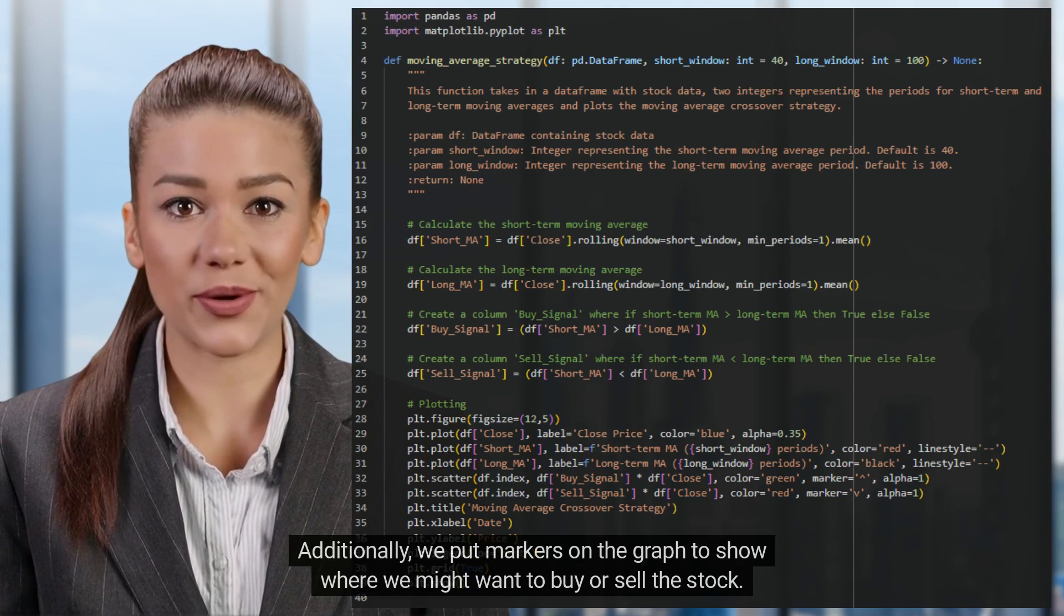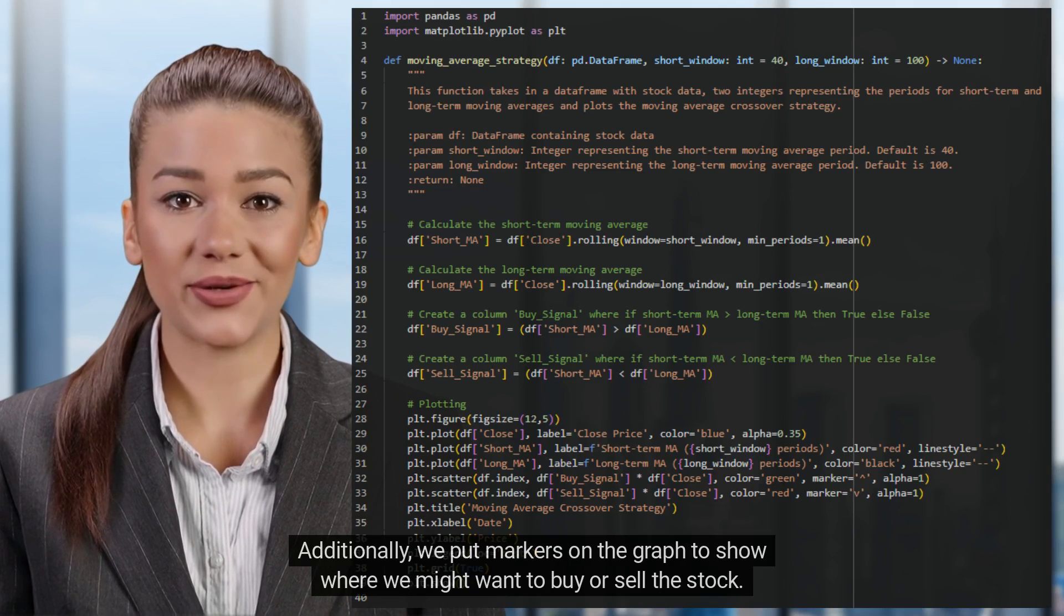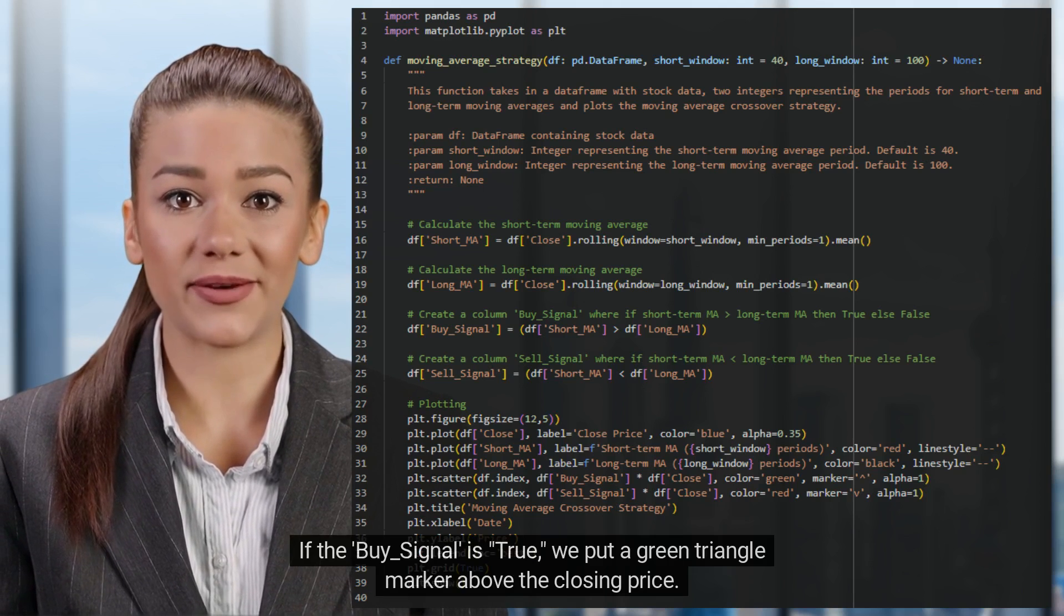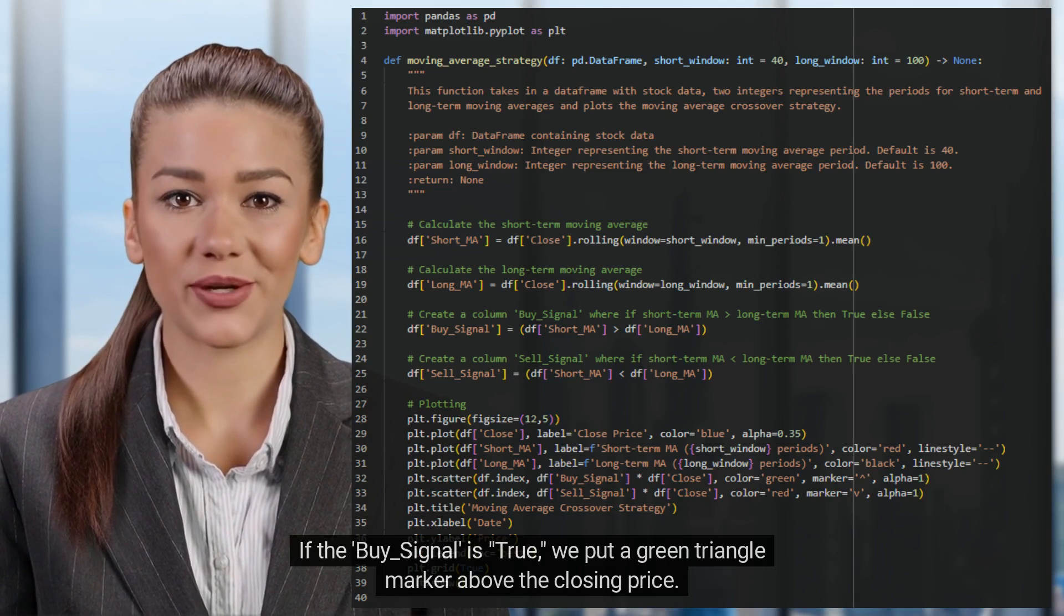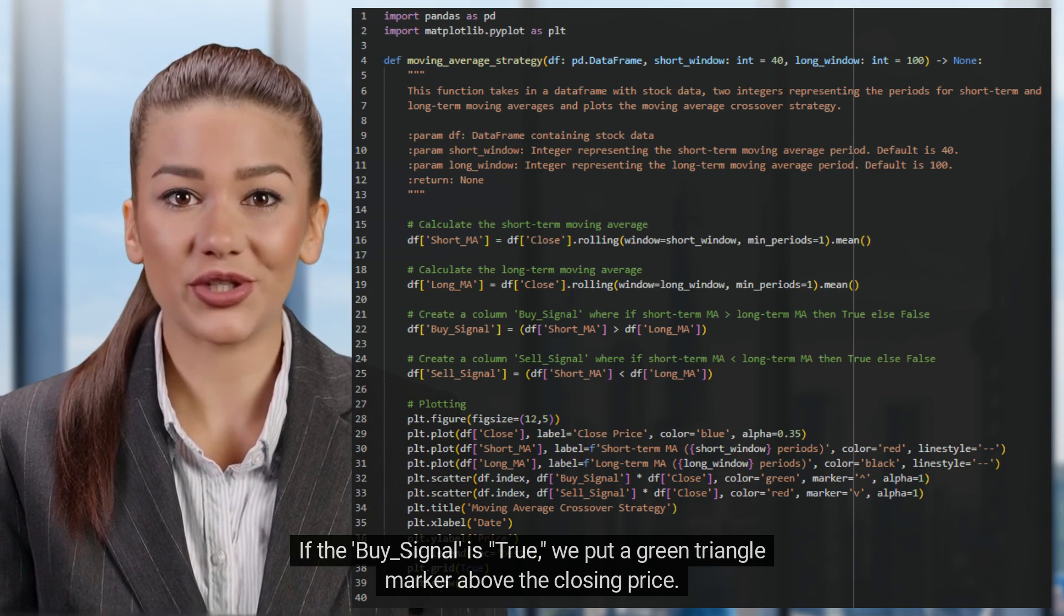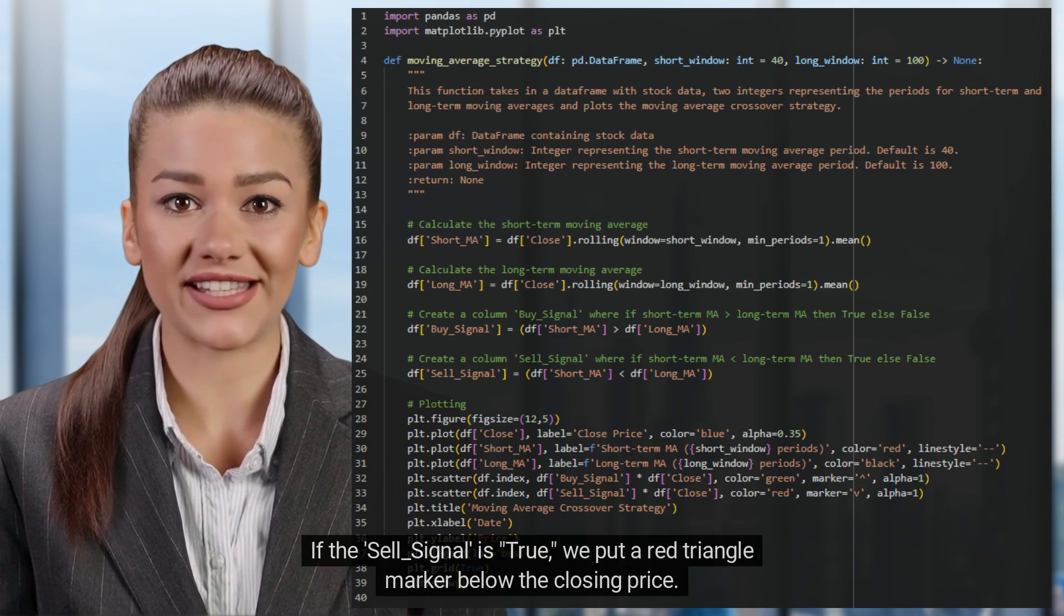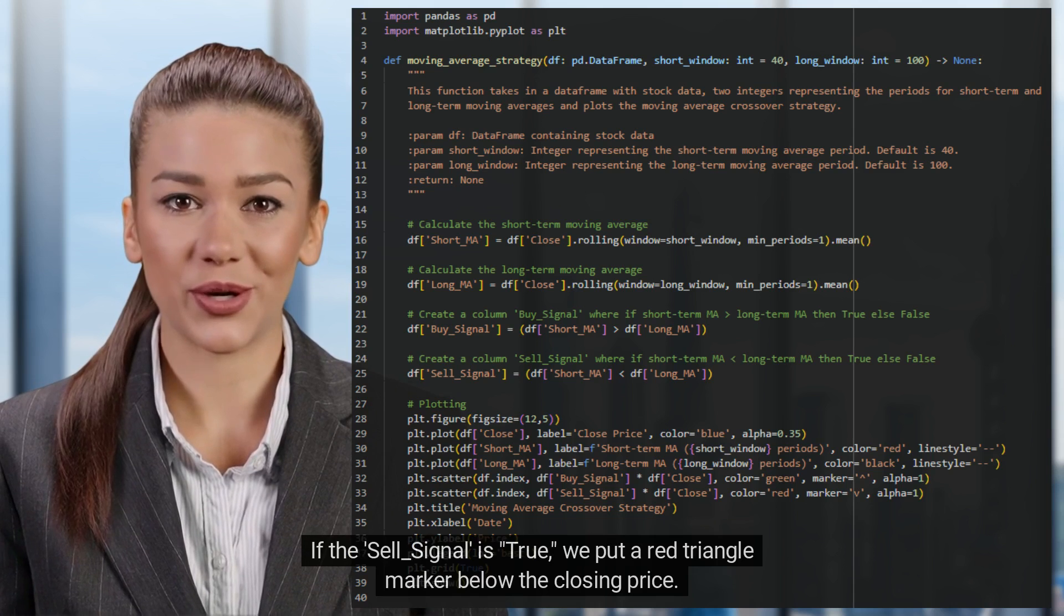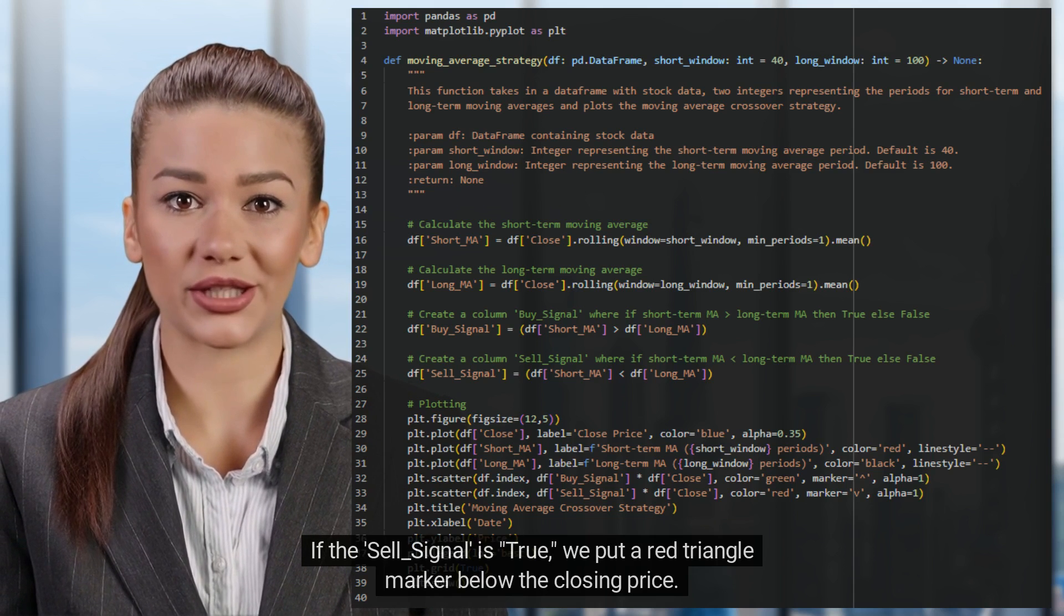Additionally, we put markers on the graph to show where we might want to buy or sell the stock. If the buy_signal is true, we put a green triangle marker above the closing price. If the sell_signal is true, we put a red triangle marker below the closing price.